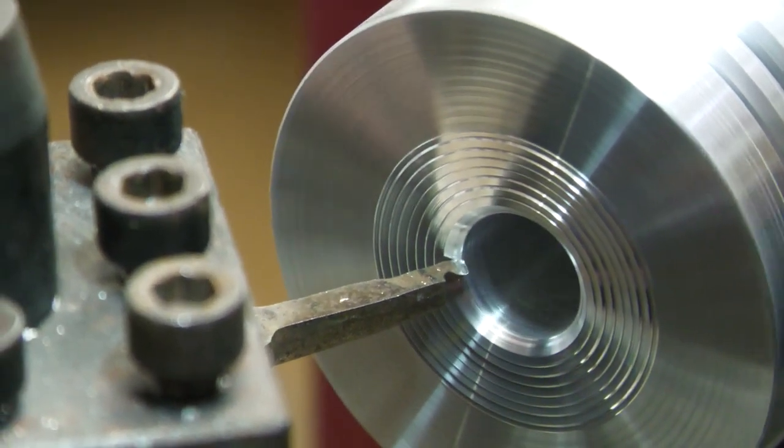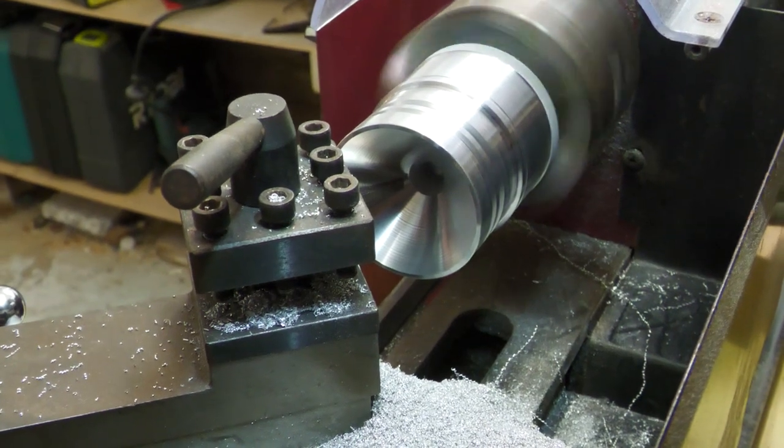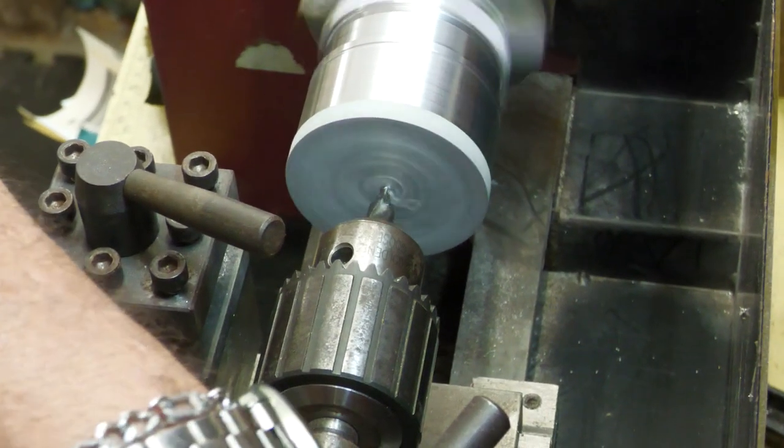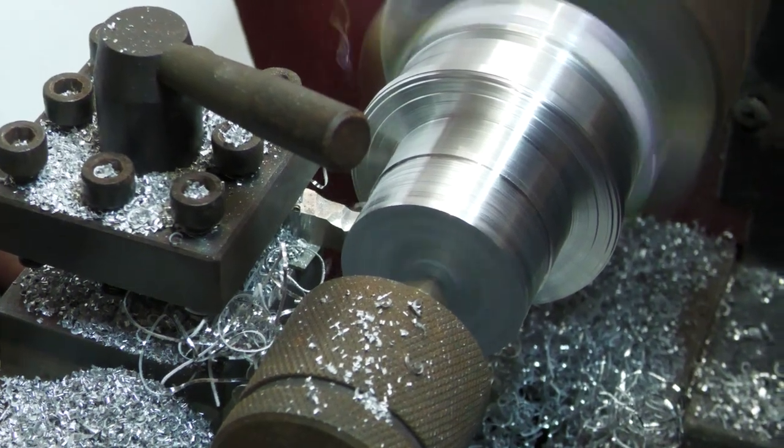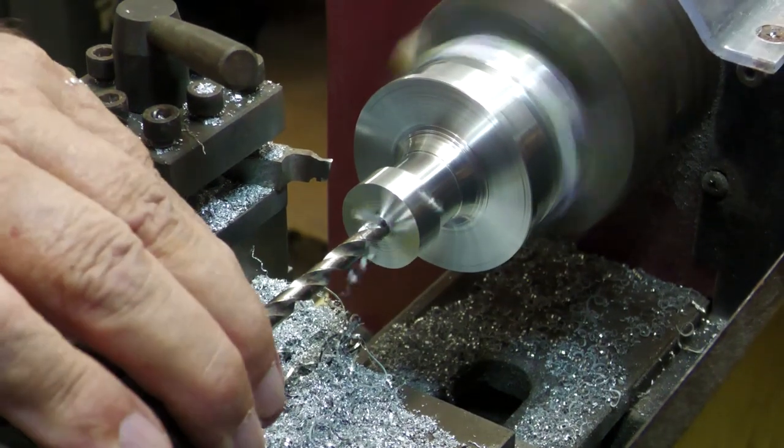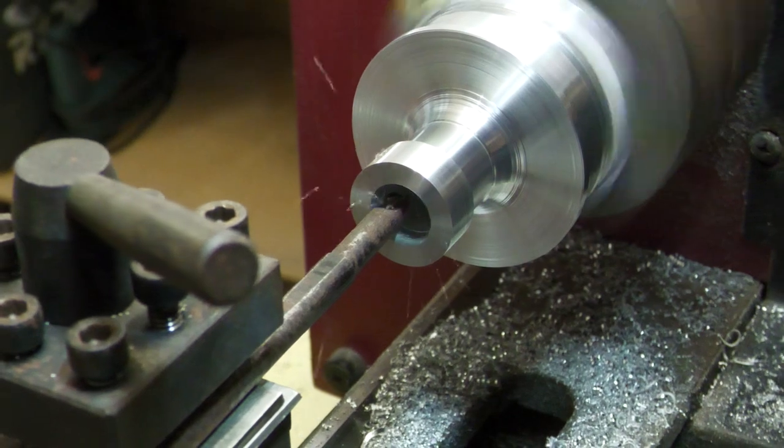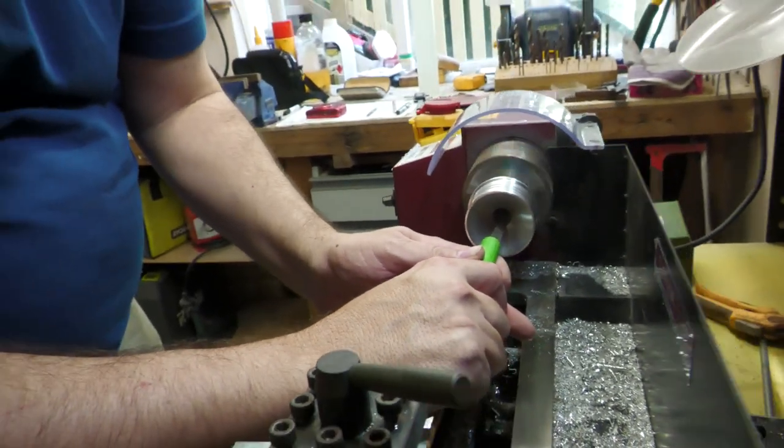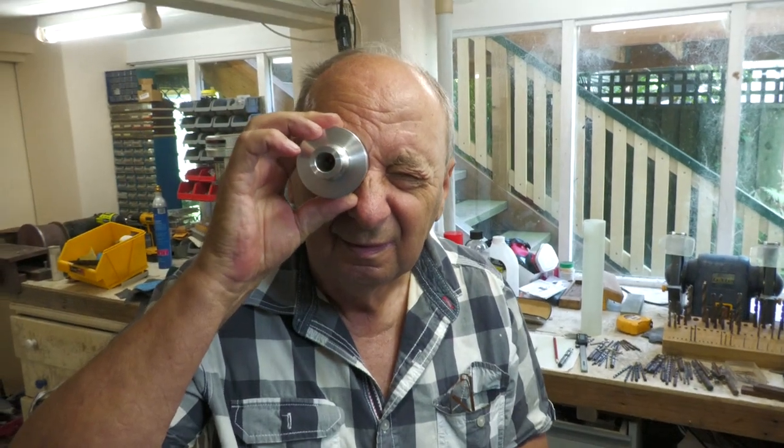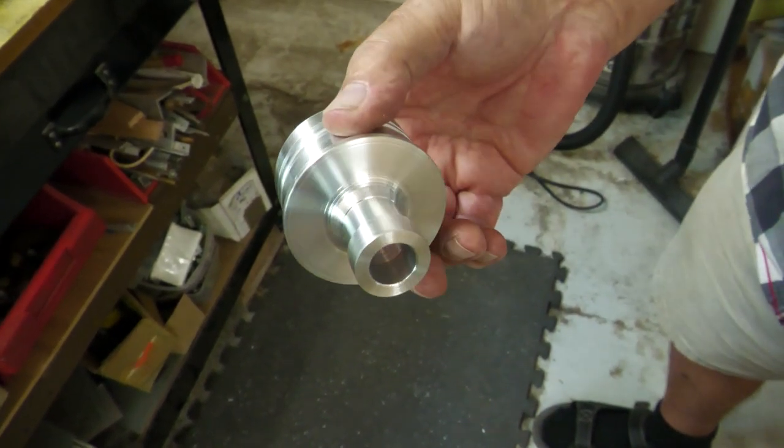We can't take very deep cuts because the lathe would stall, so it's a lot of shaving basically. Here's a quick montage of the process of extracting the nozzle from the chunk of metal.